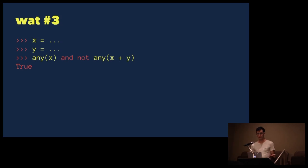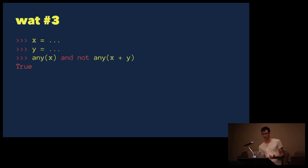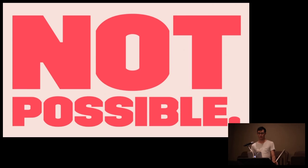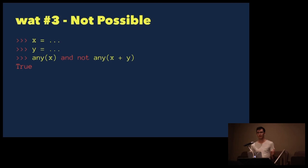Watt number three: can we create two lists x and y such that at least one element in x is true — that's what any does — but when we add y to x, there are not any elements that are true? This is actually not possible. No matter what we add to x, if there is some truthy value in it, appending y to it will not change what's in x. So the elements in y have no effect, and if anything in x is true, the entire any will be true as well.